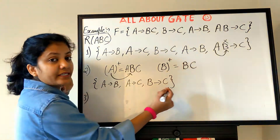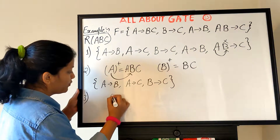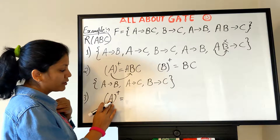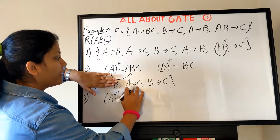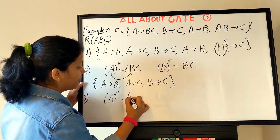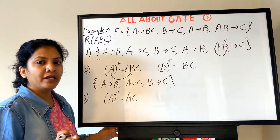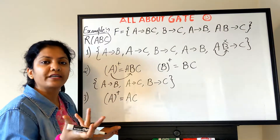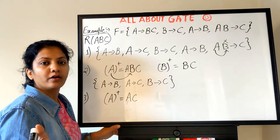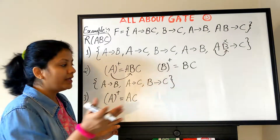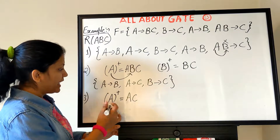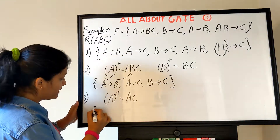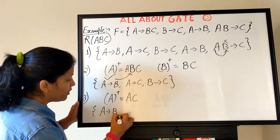We find the closure of A using only the remaining FDs. We find A and C, but not B. If we don't find B, that means A→B is essential — you cannot remove it, because without it A cannot determine B. With that conclusion, A→B is essential and must be included in the final set.